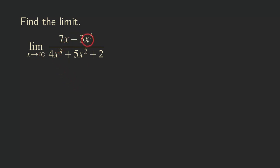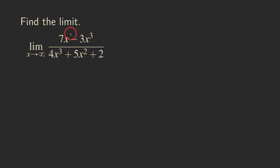If we plug in infinity at the top and at the bottom, we cannot really plug in infinity because infinity is not a number. If you think about x approaching infinity, the x cubed is also approaching infinity, and then we have infinity subtracting infinity — that's an indeterminate form, so we have no information. Even though everything is positive at the bottom and the bottom approaches infinity, we have no information at the top. So how can we do this problem?